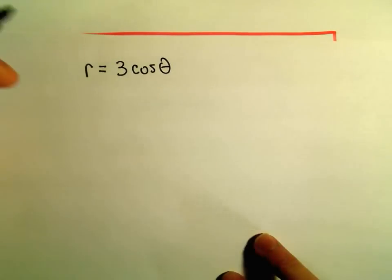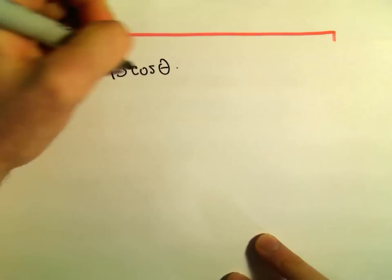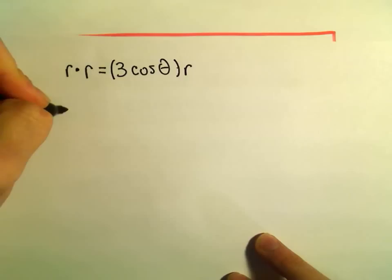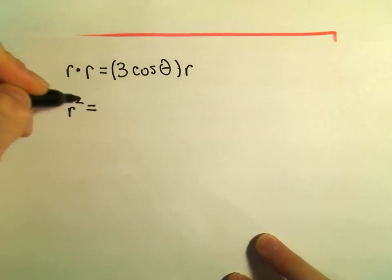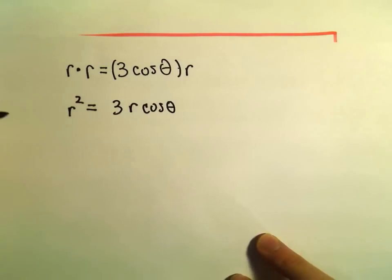Well, that's what I'm going to do. I'll just multiply both sides by r. So we have r squared equals, I'm going to write it as 3r cosine theta.